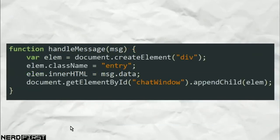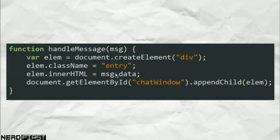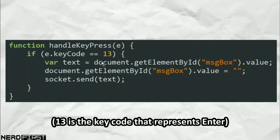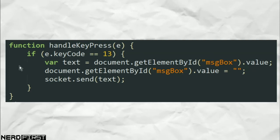How do we handle a message? We are actually creating an element, assigning the data from the message to it, and then adding it to our screen — specifically to the chat window. The element is a div with the class name 'entry', so that later on we can easily apply styles for it to look the way we want. How do we handle a key press? We simply check to see if the user has pressed the Enter key. If they have, we read out the text from the text box, remove the text from the text box — that's just how chat clients work — and then we take the extracted text and send it to the socket.